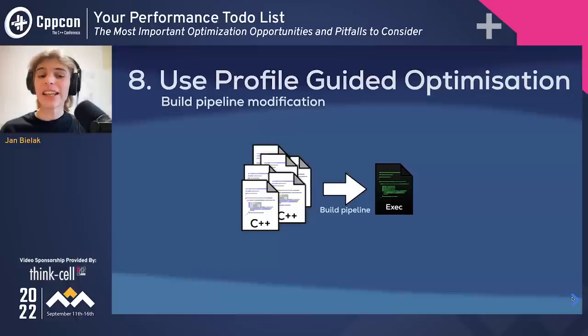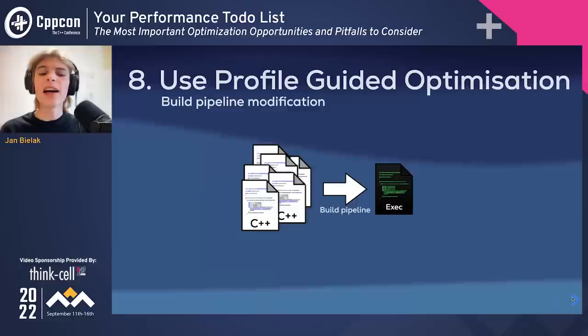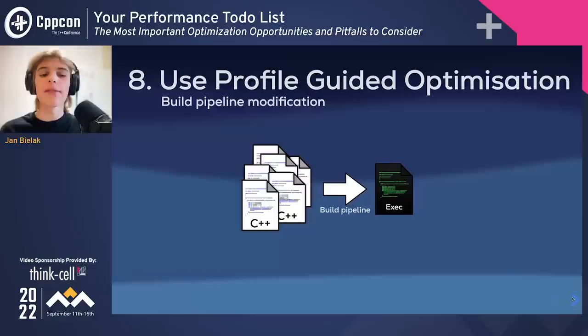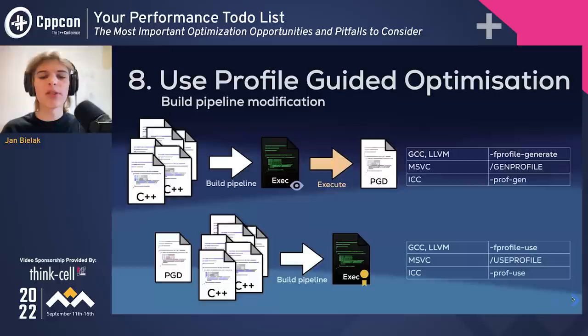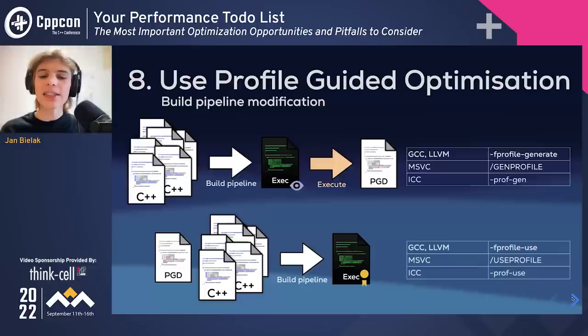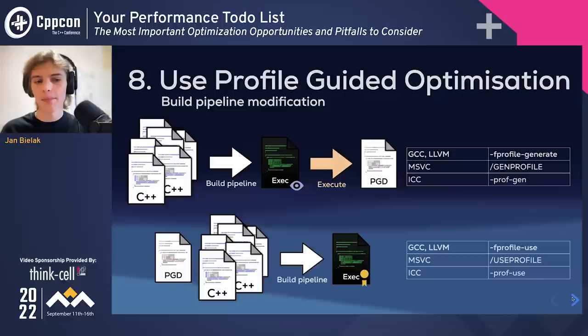Profile-guided optimizations (PGO) are another option. During building, optimizers make many guesses based on heuristics — for example, whether a given branch is taken often. An optimizer needs this to generate code friendly to the hardware branch predictor. With PGO, we use real-world data gathered from running our program instead. When used, building code becomes a three-step process: first, the code is compiled with performance counters embedded; then the program is run, producing a profiling results file; finally, the program is built again with profiling results as input. This executable is specifically tuned to the gathered data. The profiling run needs to be representative of how the client is expected to use the program.